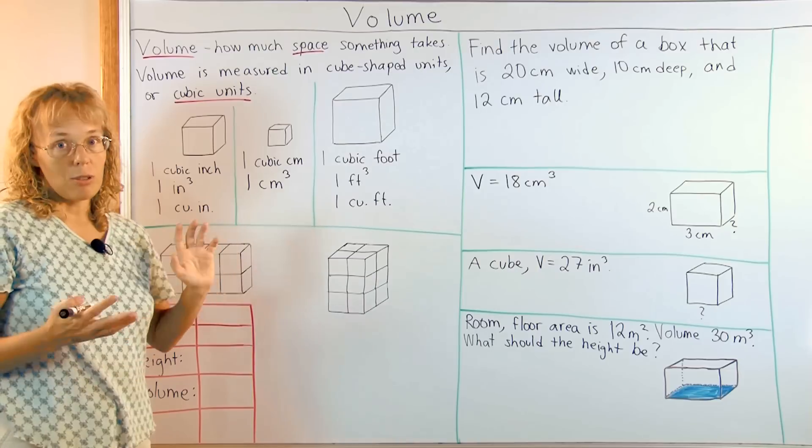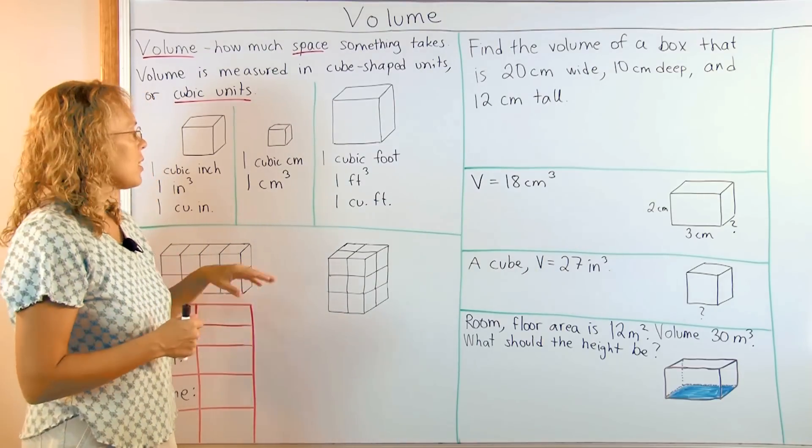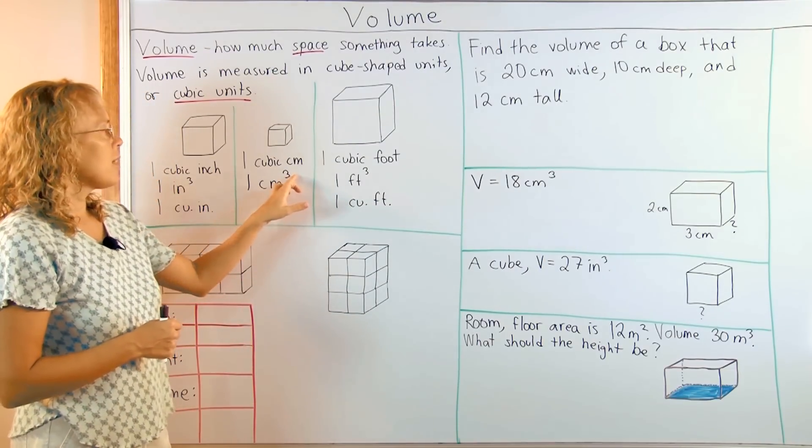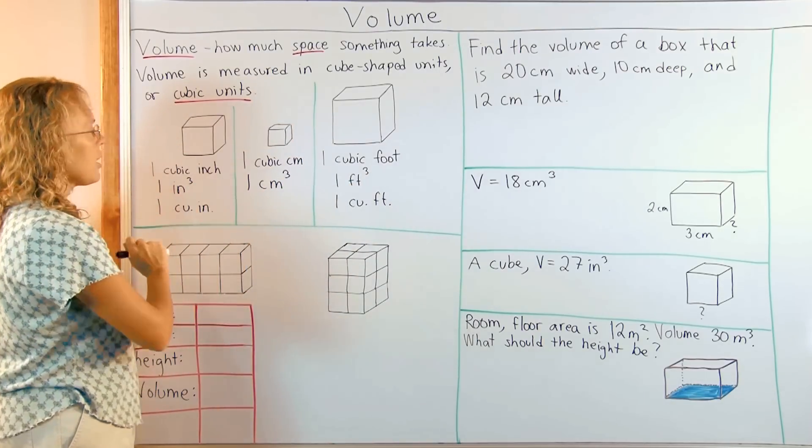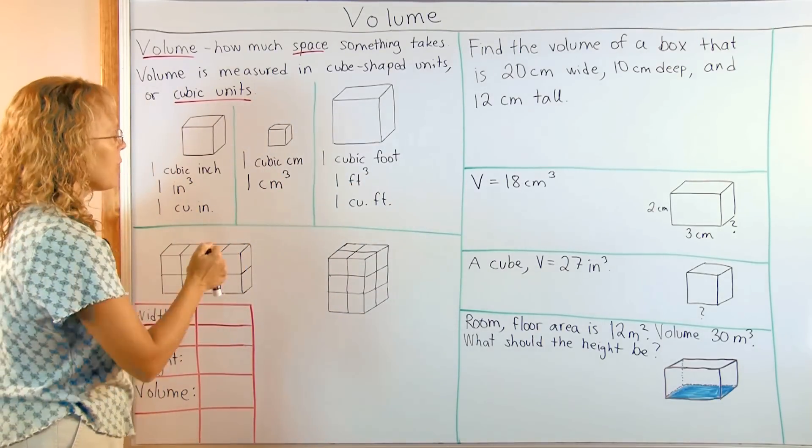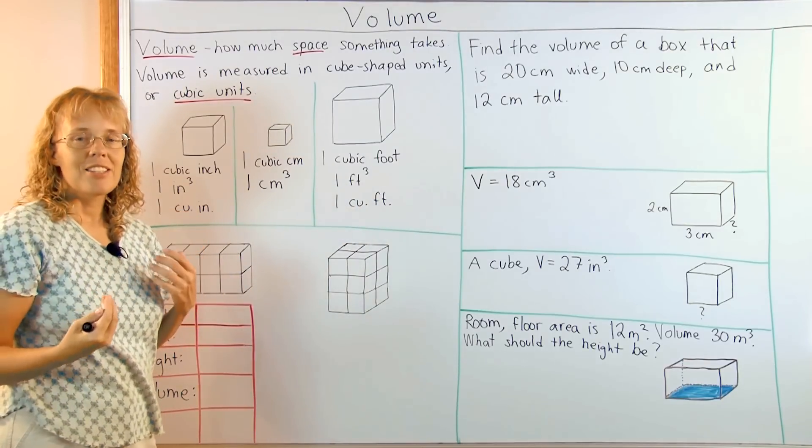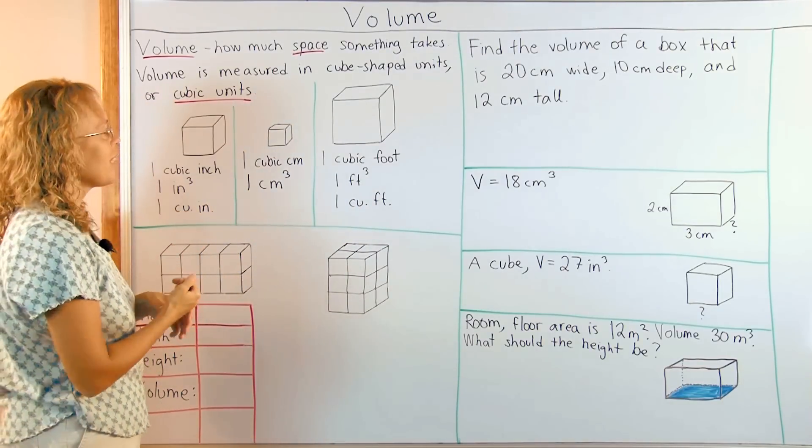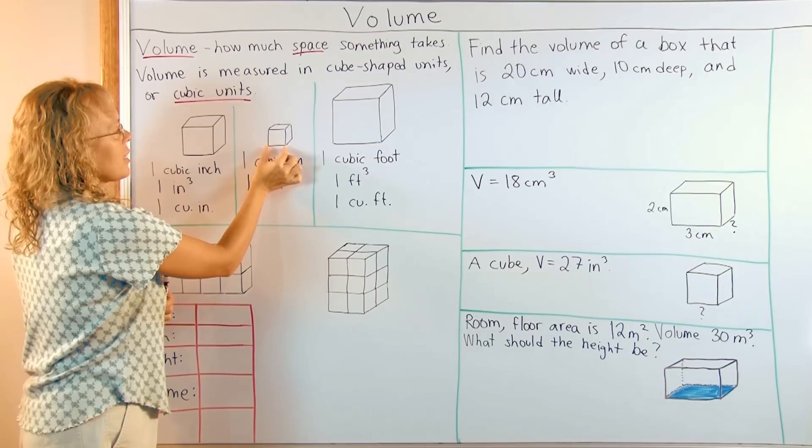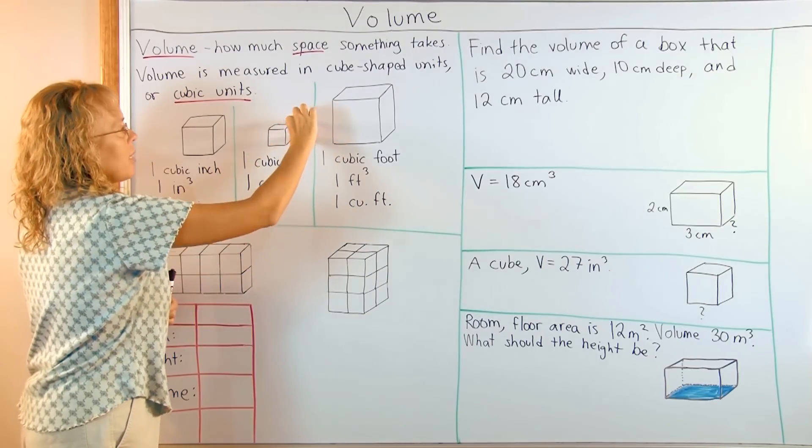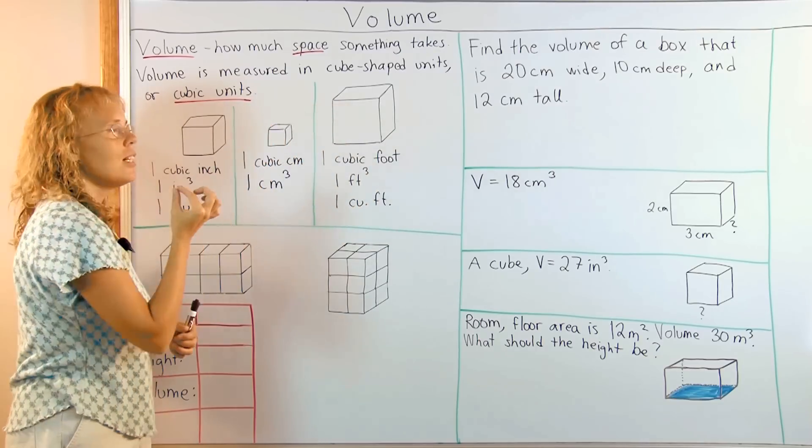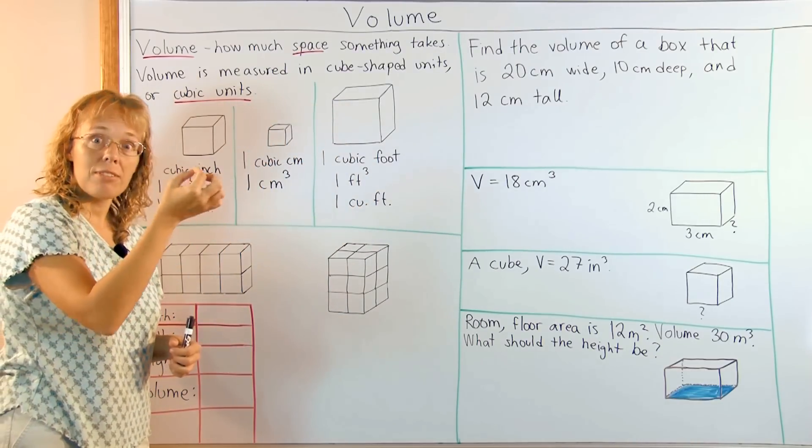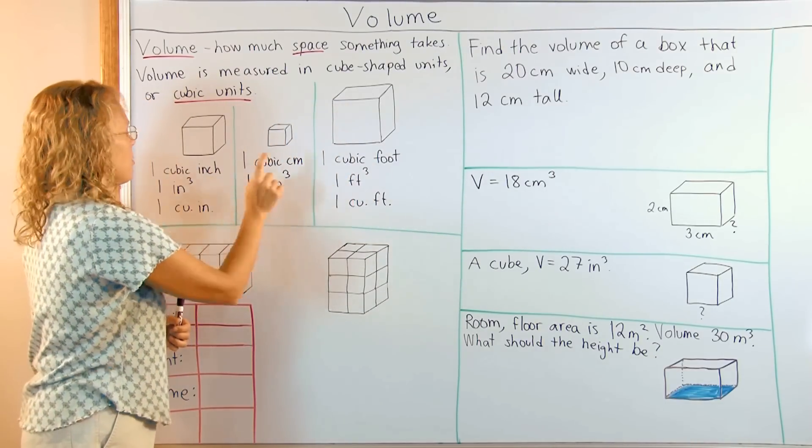This three here, elevated three, comes from the fact that we as if multiply the centimeter three times by itself. See here, this is centimeter by a centimeter by a centimeter. It's like centimeter times centimeter times centimeter. Centimeter multiplied by itself three times. That's where the three comes from.